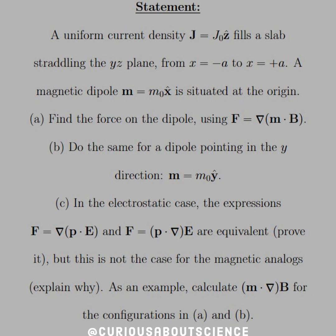A uniform current density J equals J₀ẑ fills a slab straddling the YZ plane from X equal negative a to X equal positive a. A magnetic dipole M equal m₀x̂ is situated at the origin.